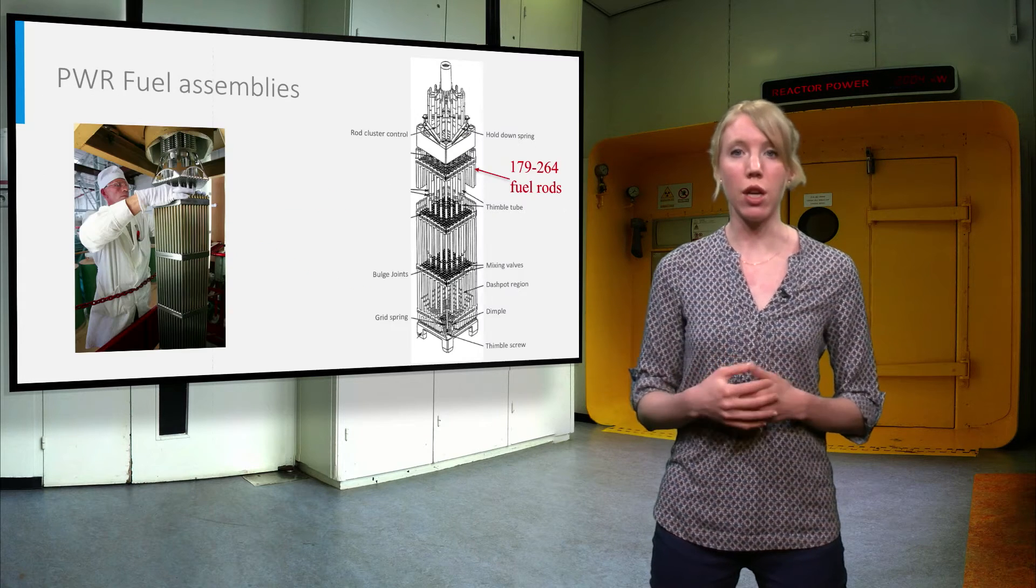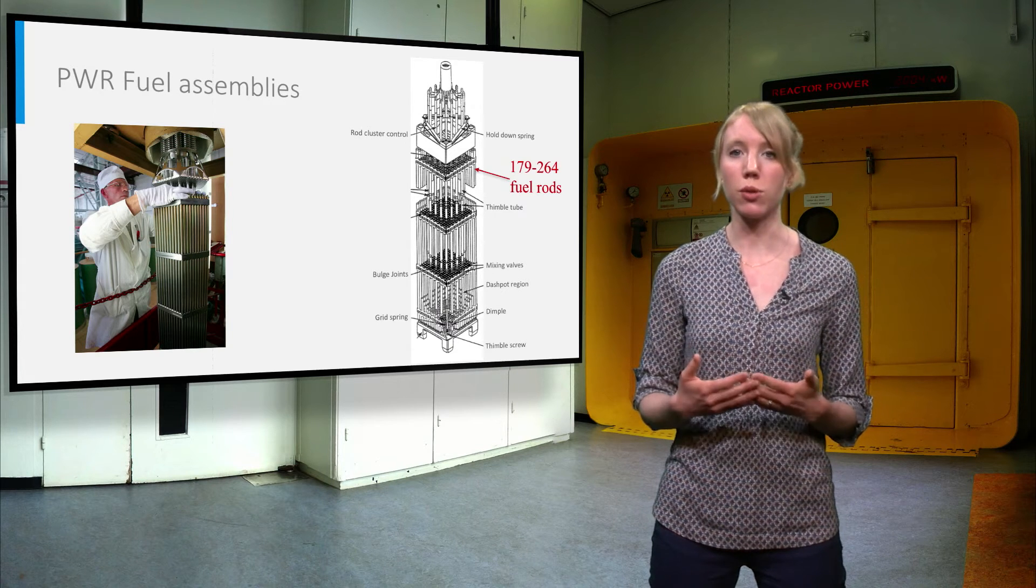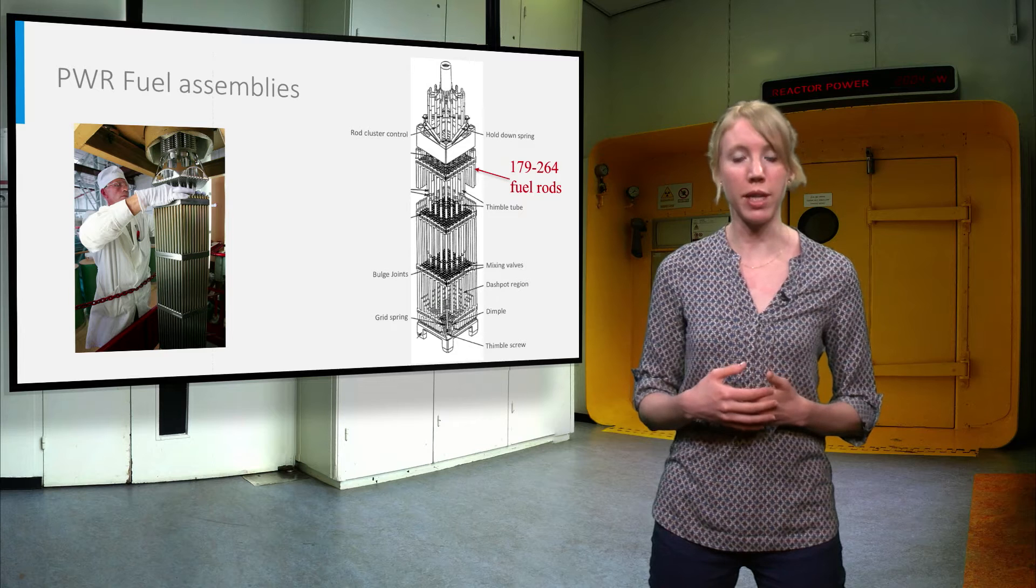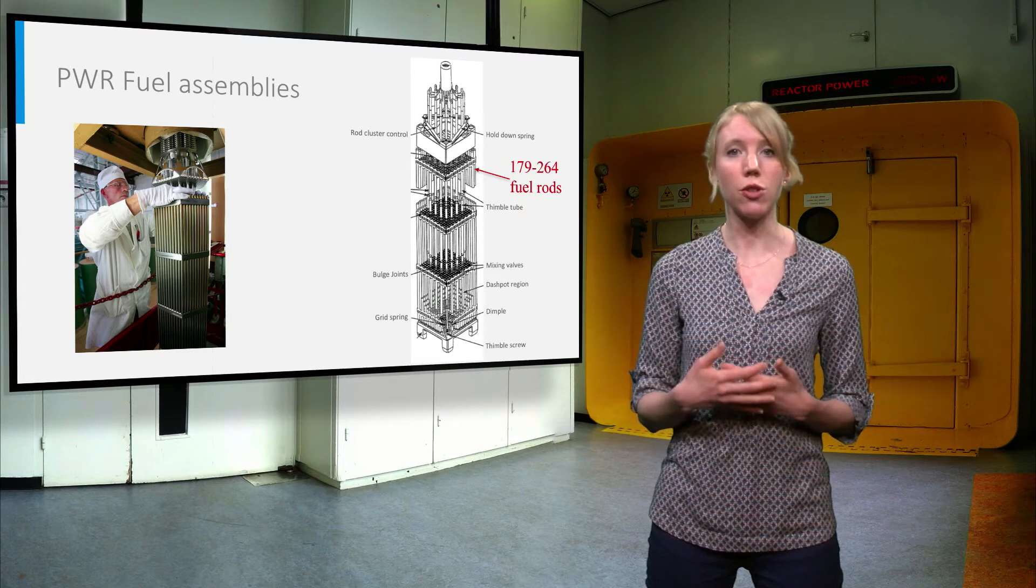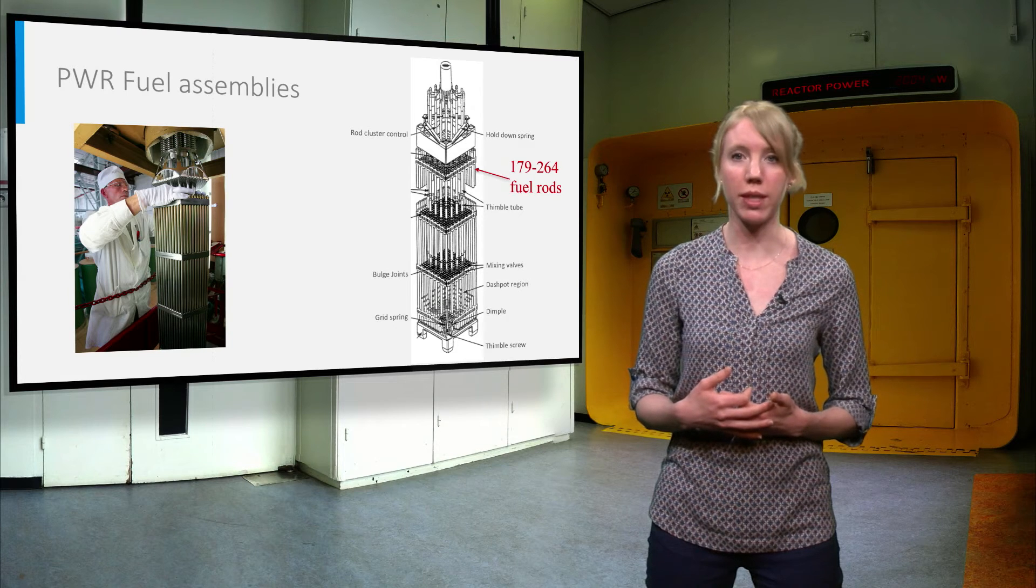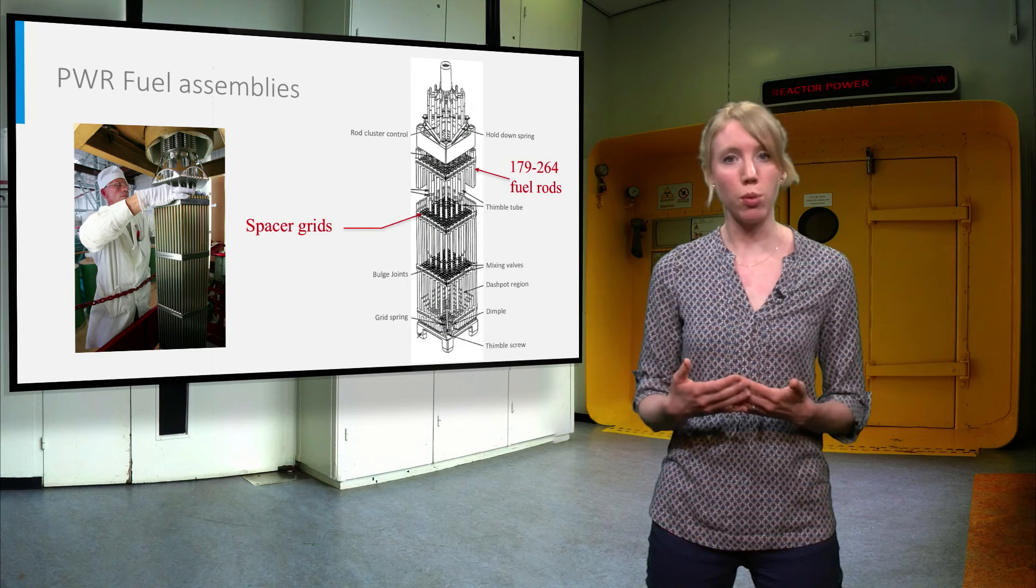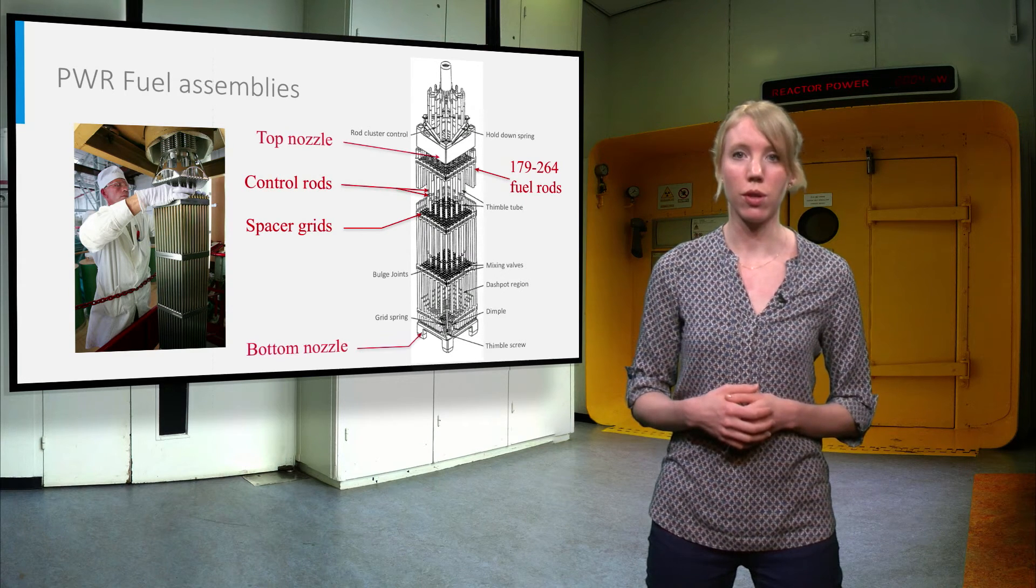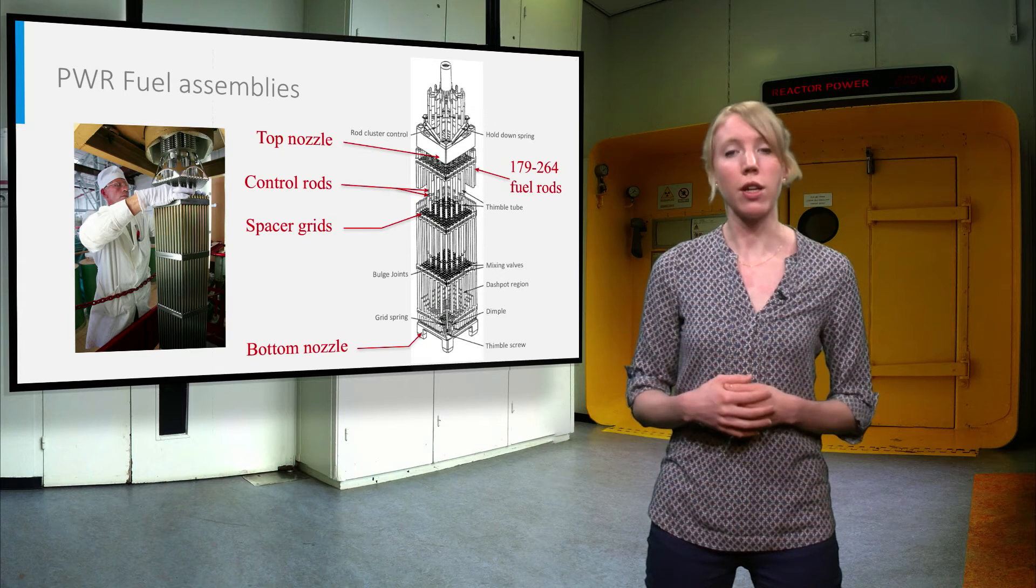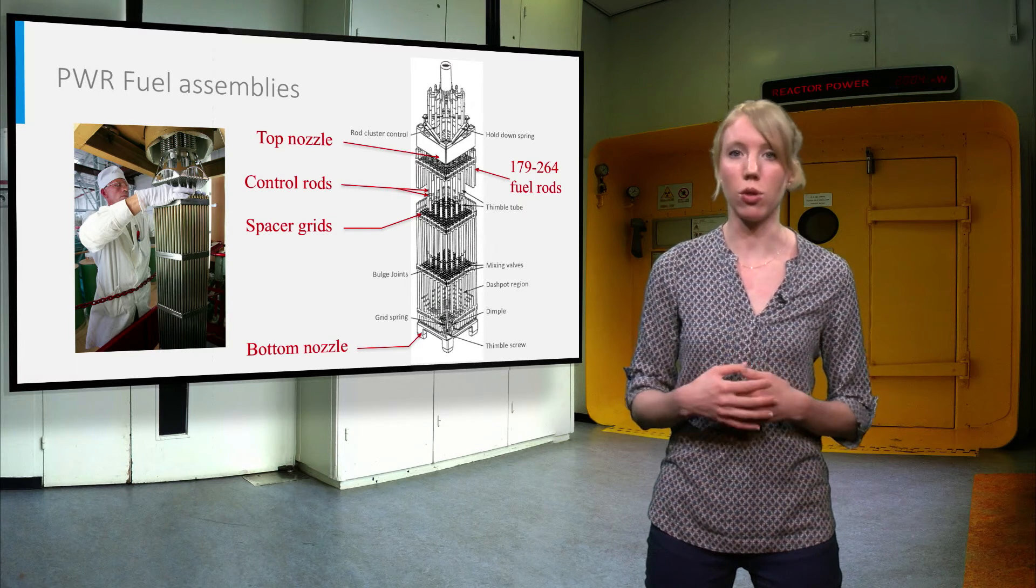In the fuel assembly of the pressurized water reactor, 179 to 264 fuel rods are arranged in a 17x17 square geometry and are held together by several spacer grids. The assembly also contains several control rods and a top and bottom nozzle for the coolant. In total, there are 150 to 250 of these fuel assemblies in the reactor core.